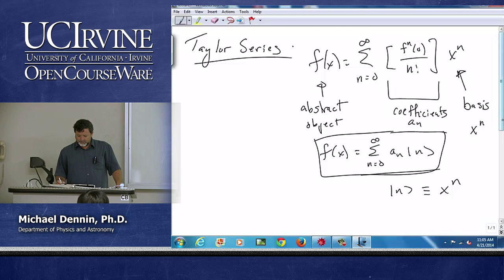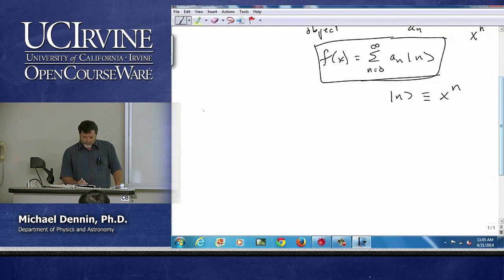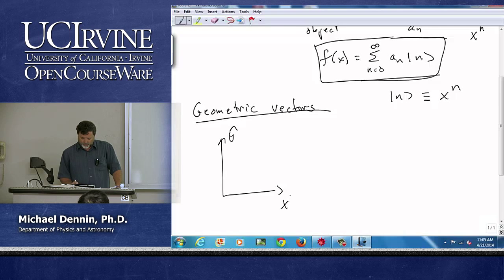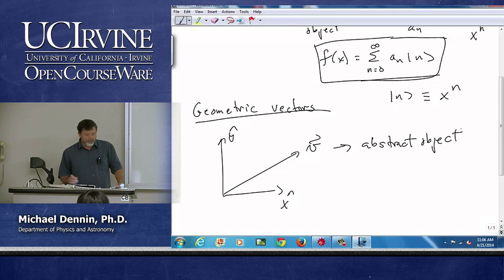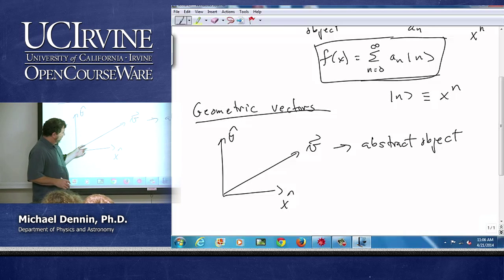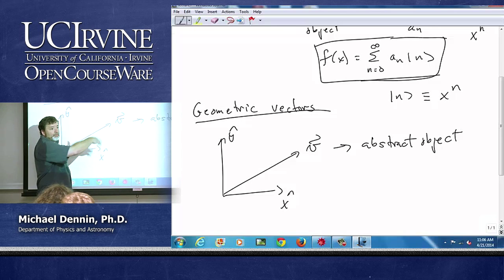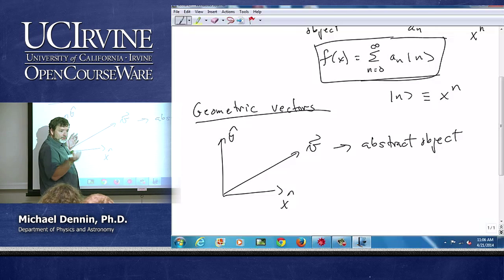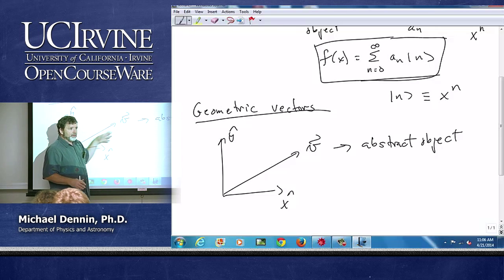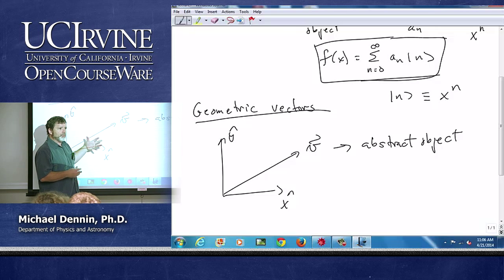Now building on that, the next thing we did was we looked at geometric vectors. Because they're easy to draw, we'll stick in the xy plane. But again, we talked about this vector now as my abstract object. Keeping in mind that the vector v existed independent of any coordinate system. It is just some direction and magnitude in space. Maybe it's a velocity, maybe it's a displacement, maybe it's a force, but it's some object. Its key defining characteristics were its direction and magnitude, but it just existed.